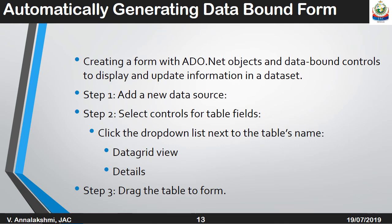Automatically generating a data-bound form involves creating a form with ADO.NET objects and data-bound controls to display and update information in a data set. Step one: add a new data source. Step two: select the controls for table fields — for example, click the drop-down list next to the table name, then choose Data Grid View and Details. Step three: drag the table to the form.